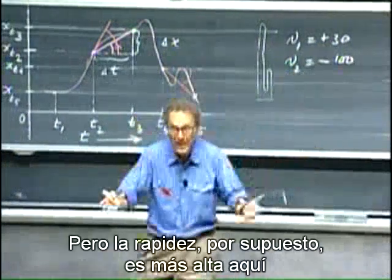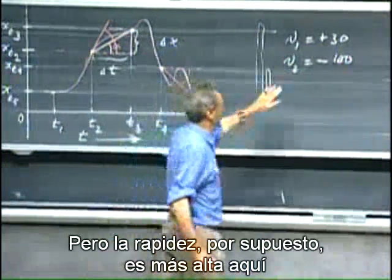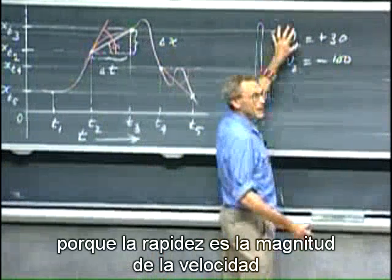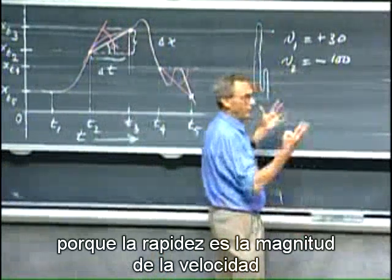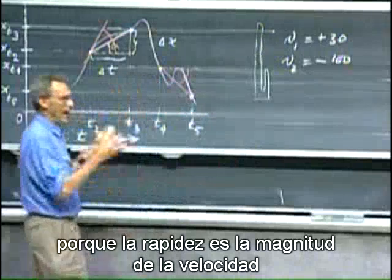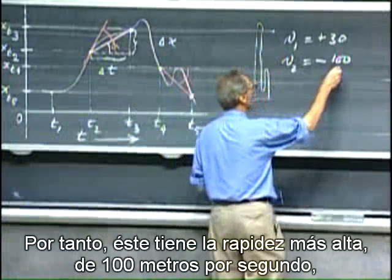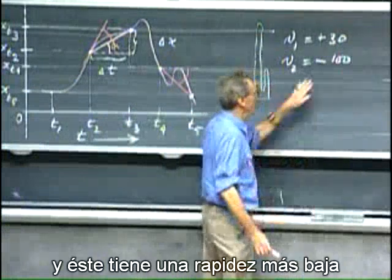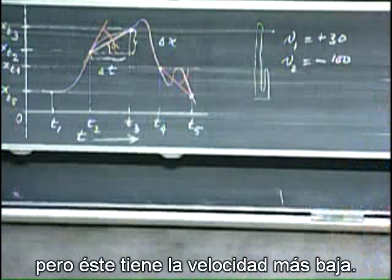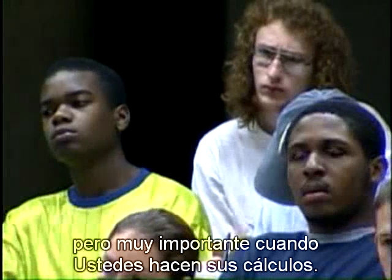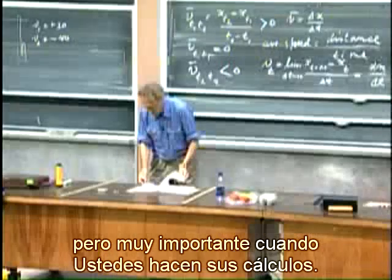But the speed, of course, is higher here because the speed is the magnitude of the velocity and is not sign-sensitive. So this has the highest speed of 100 meters per second and this has a lower speed, but this has the lowest velocity. It's just an algebraic game, but very important when you make your calculations.